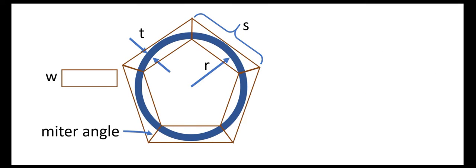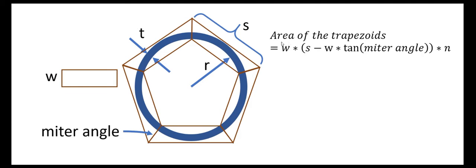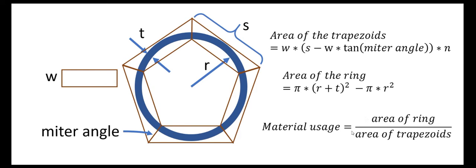To do that, we need the area of the polygon, which is given by this formula. It's the width of the board times this expression: the side length minus the width of the board times the tangent of the miter angle. That is the area of each one of these trapezoids. And then we have n number of those trapezoids. We want to compare that to the area of the ring, which is given by pi r squared of the outer edge minus pi r squared of the inner edge. If we take the ratio of those two numbers, we'll get a percentage indicating how much of the material we've actually used.